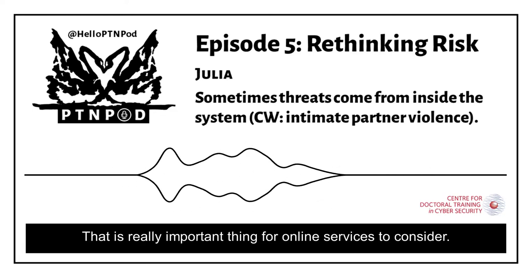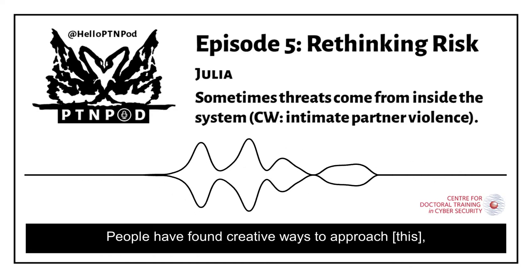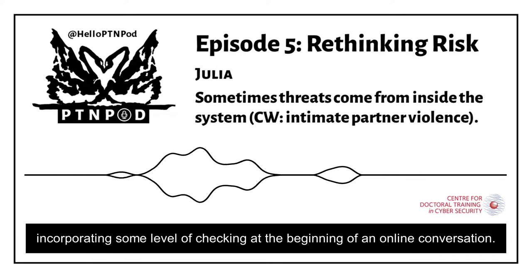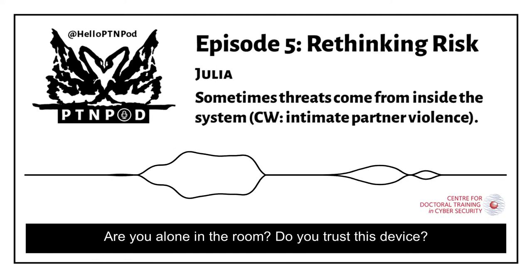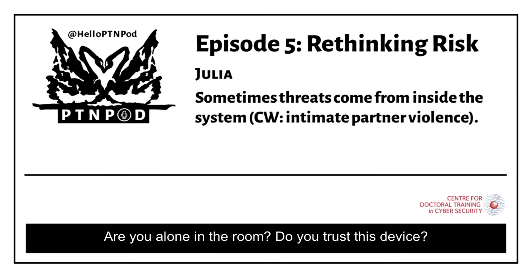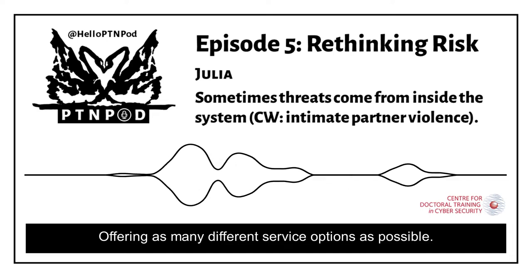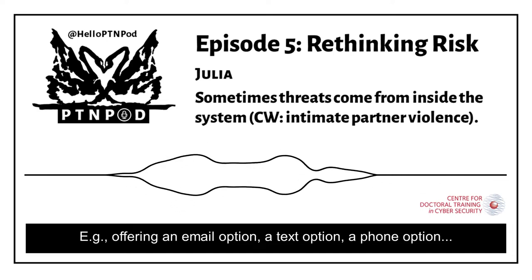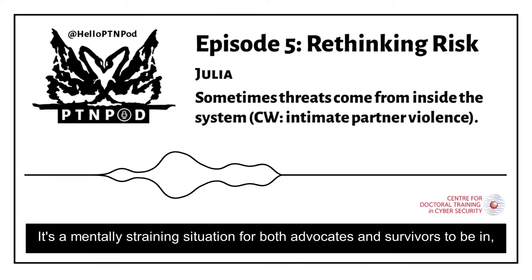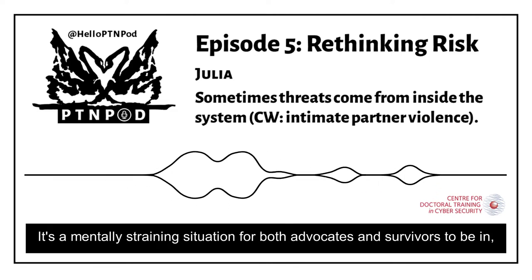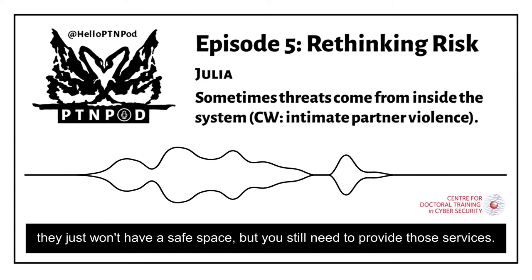It will always be the case that some people will be trapped in a domestic situation with an abuser, so that's a really important thing for online services to consider. People have found really creative ways to approach it, incorporating some level of checking at the beginning of an online conversation: Are you alone in the room? Do you trust this device? Offering as many different service options as possible — email, text, phone. It's a really mentally straining situation for both advocates and survivors, knowing that for some people they just won't have a safe space, but you still need to provide those services.